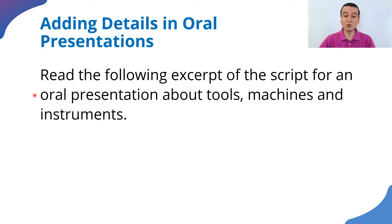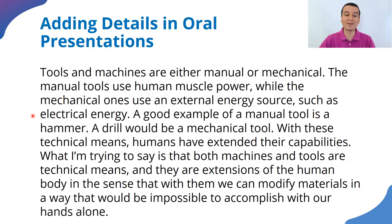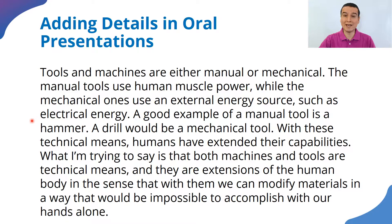With that vocabulary, please read the following excerpt of the script of an oral presentation about tools, machines, and instruments. Let's read it together: tools and machines are either manual or mechanical. The manual tools use human muscle power while the mechanical ones use an external energy source such as electrical energy.